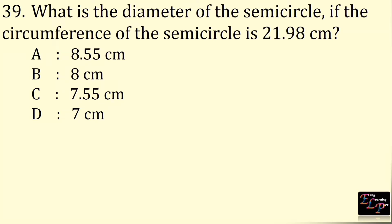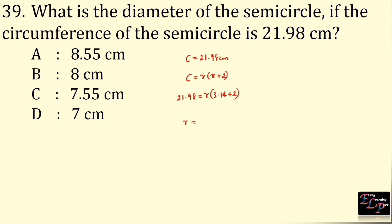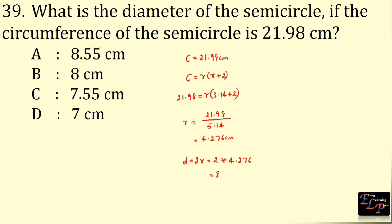What is the diameter of the semicircle if the circumference is 21.98 cm? Circumference is 21.98 cm. Circumference of a semicircle is r(π + 2): r = 21.98 ÷ 5.14 = 4.276 cm. Diameter is twice the radius: 2 × 4.276 = 8.55 cm.